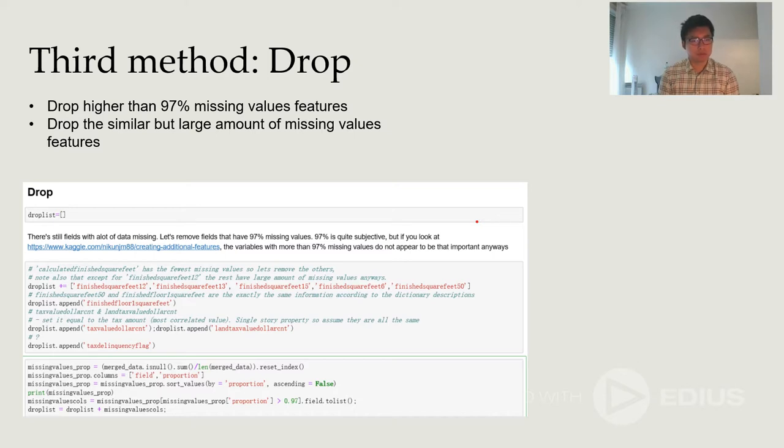We remove fields that have 97% missing value. 97% is quite subjective. But if we look at our heat map, the variable with more than 97% missing value don't appear to be that important anyway.